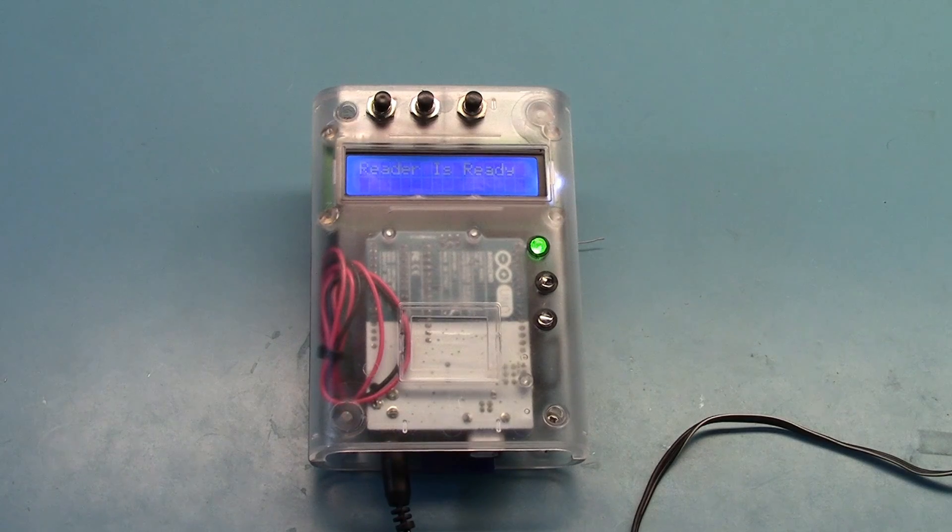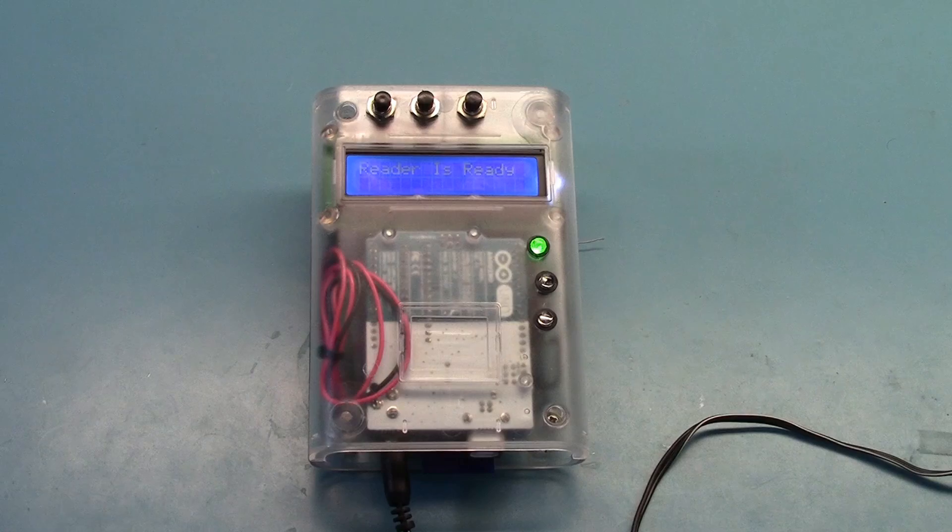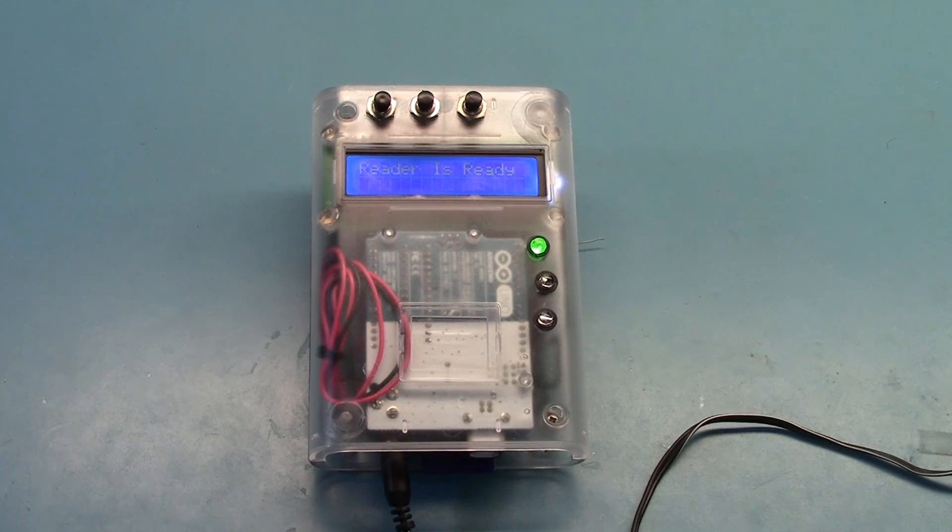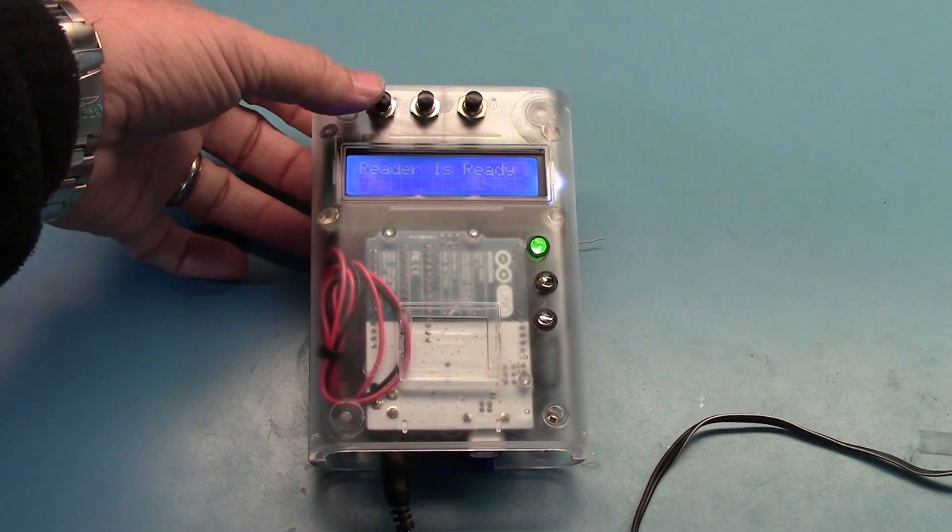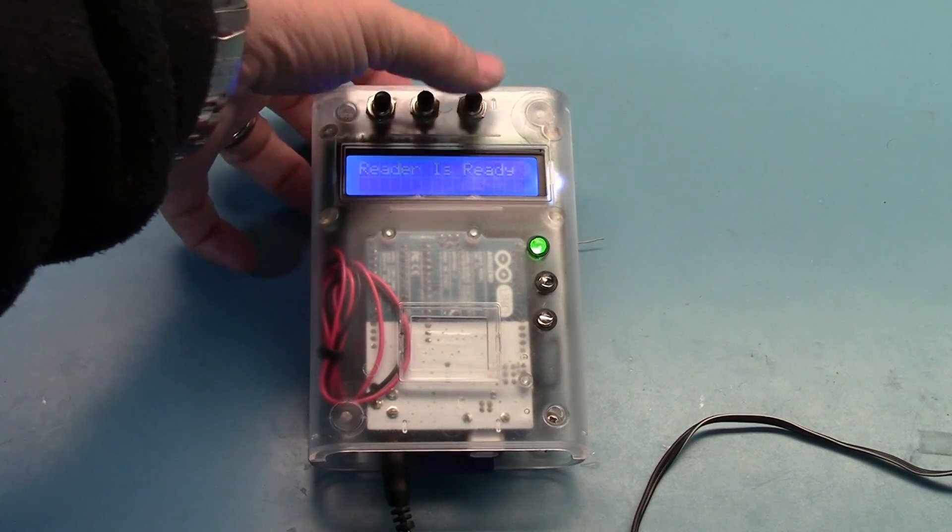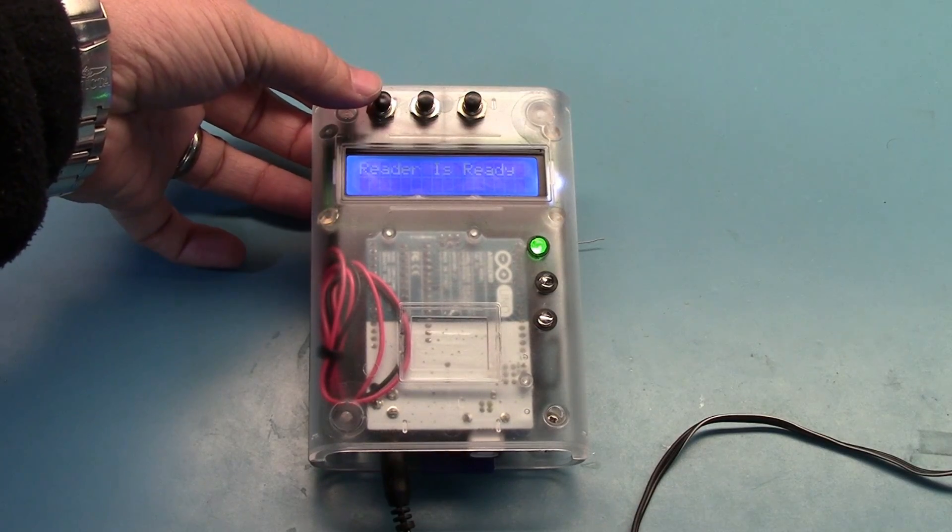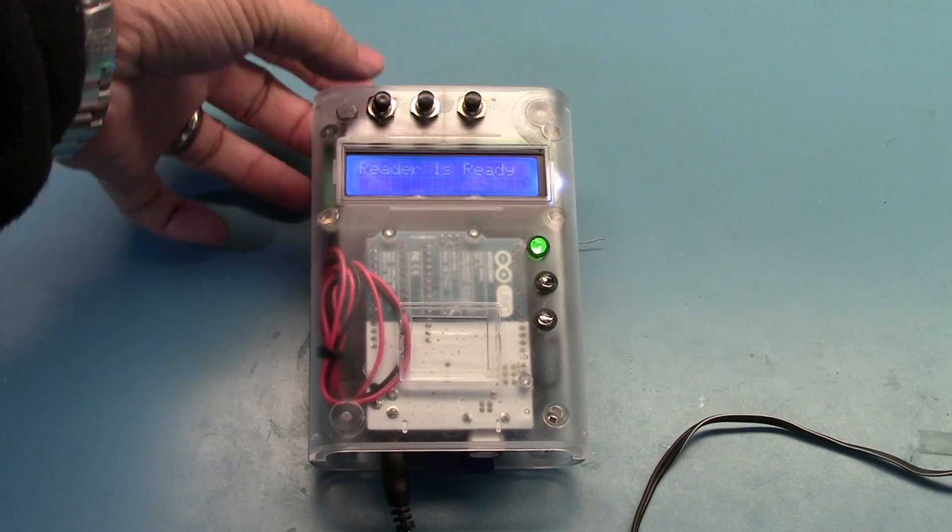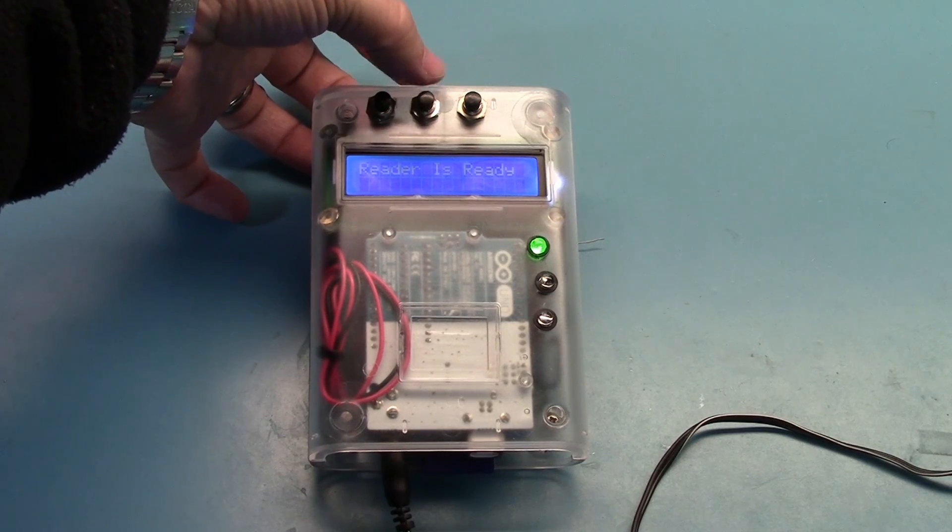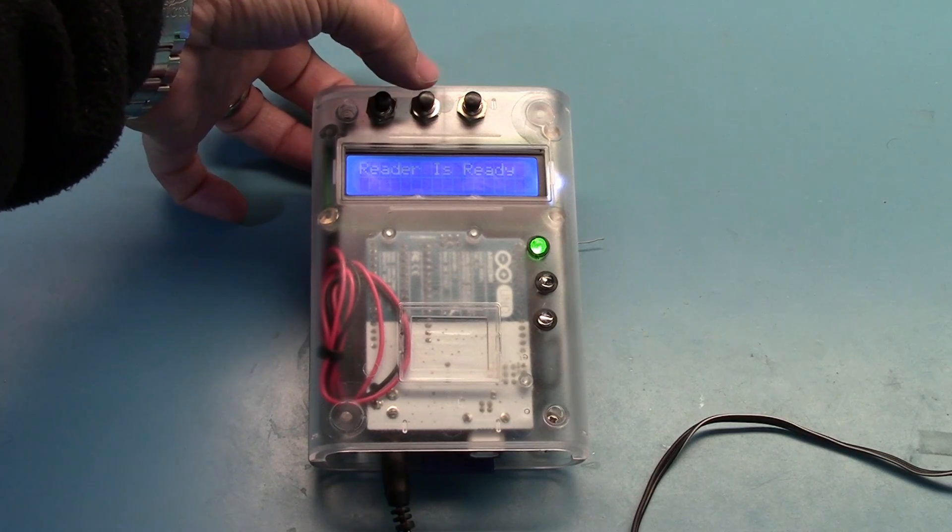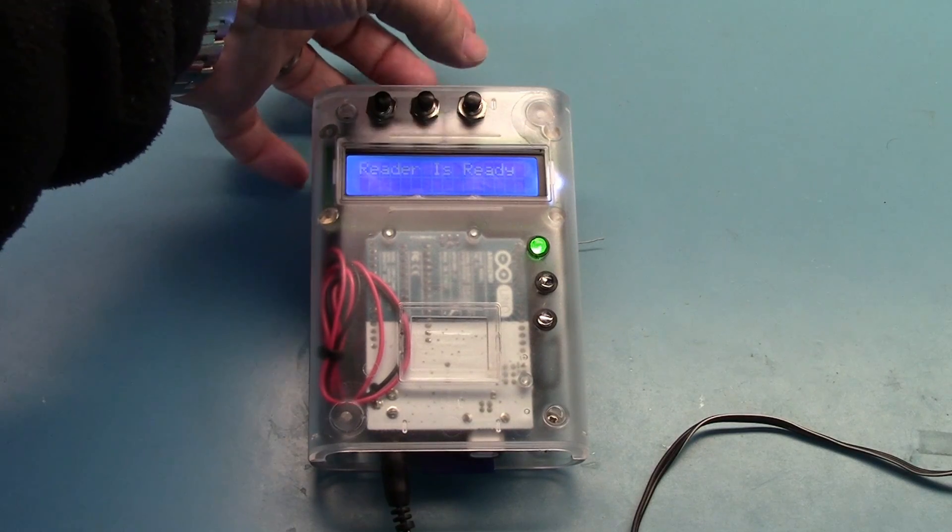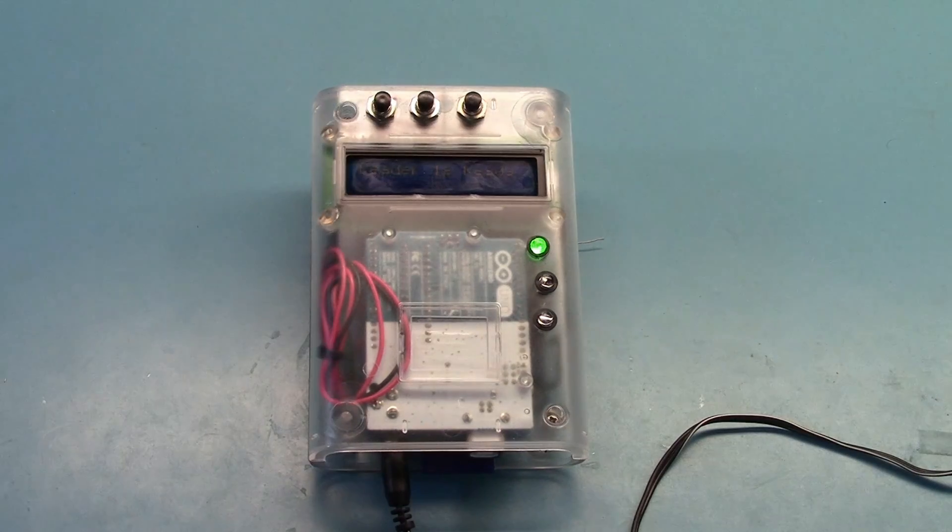So right now the device is set up to have 10 pre-programmed users that a swipe will be compared against. For us to be able to program those 10 users into EEPROM memory on the Arduino Uno, we need some sort of programming interface. To do that we've added the LCD and then some programming buttons. The far left here is the program button. This will allow us to enter the programming mode. The next over is the next button. It allows us to thumb through the different users while we're in programming mode. And then the last button here is an enter button. That's going to allow us to select a user so that we can swipe.